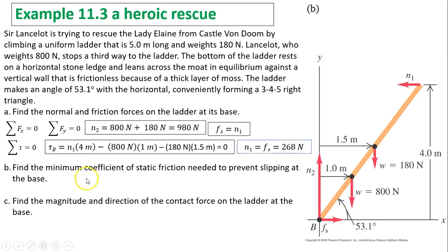Part B: Find the minimum coefficient of static friction needed to prevent slipping at the base. We know Fs equals μs times N2, so μs equals Fs divided by N2. That's 268 over 980, which equals 0.27.